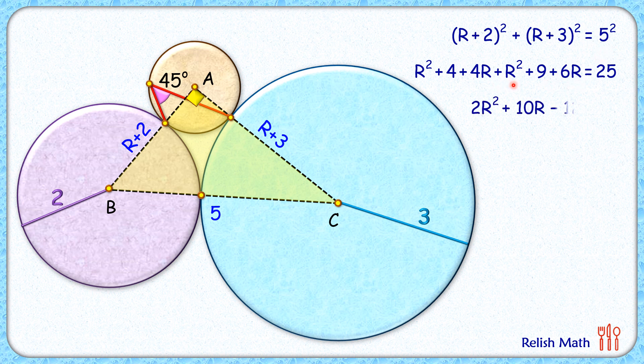Simplifying, we get 2r² + 10r - 12 = 0, or r² + 5r - 6 = 0. Solving by factoring: (r+6)(r-1) = 0, so r = -6 or r = 1. But r cannot be negative, so r = 1 centimeter is our answer.